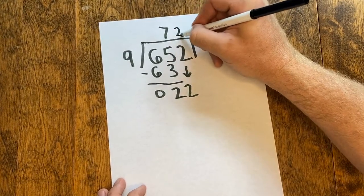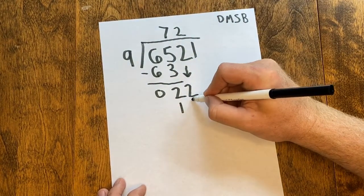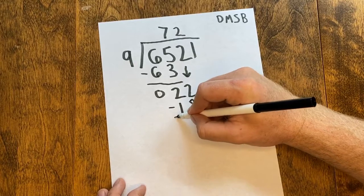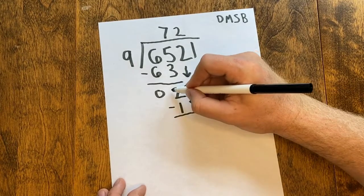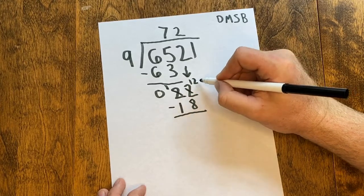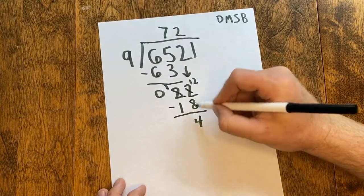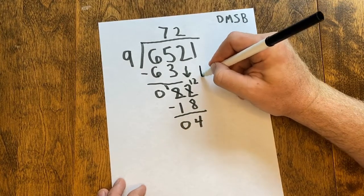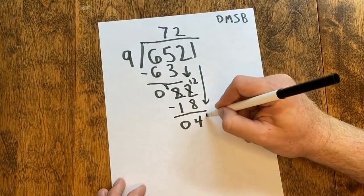9 goes into 22 two times, which is 18. I subtract. I need to regroup. 2 changes to a 1, the 2 changes to a 12. 12 minus 8 is 4, 1 minus 1 is 0, and I bring down my 1 and begin the steps again.